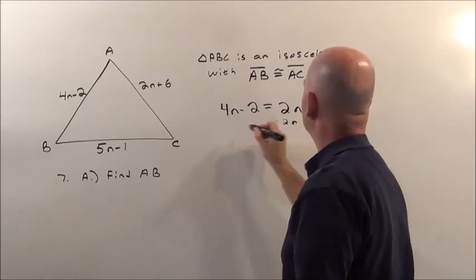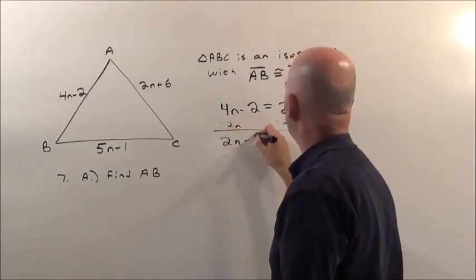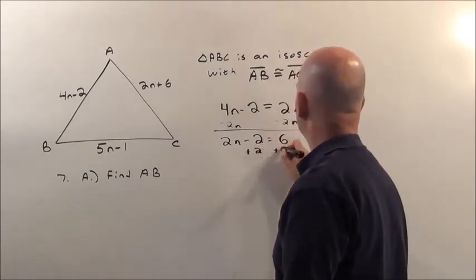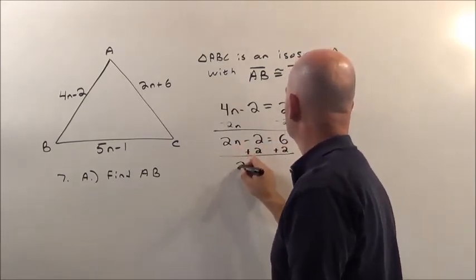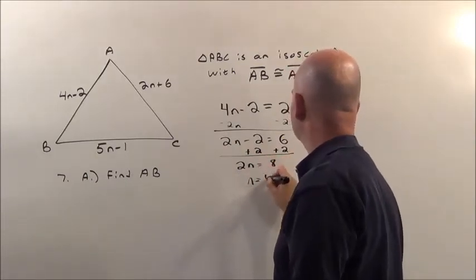So when we solve this, we subtract 2n from both sides. That gives me 2n take away 2 is equal to 6. Add 2, 2n is equal to 8. Then when I divide by 2, I'm going to get n is 4.